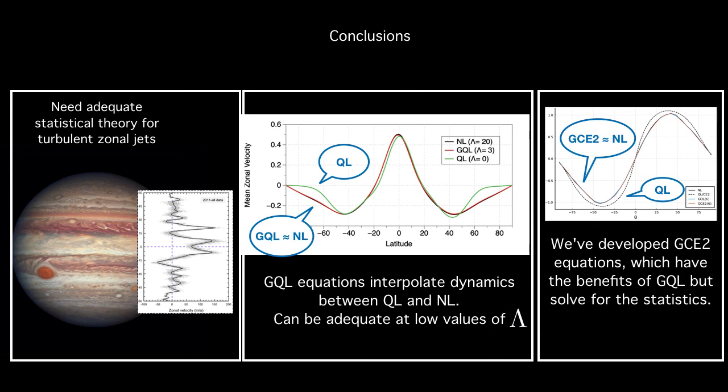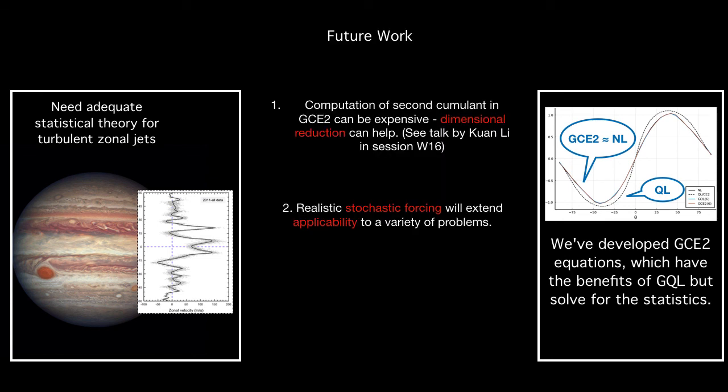Now, there is one caveat. Since GC2 involves a field bilinear, which is really a four-dimensional matrix in spectral space, we are left with the curse of dimensionality. The dimension of the matrix often is much larger than the information contained within it. So we want to use certain dimensional reduction techniques. And for some insight into what we're doing in our group, please see the talk by Kwon Lee in session W16 of this conference. The other future work we want to embark upon is to implement stochastic forcing, and this will extend our applicability to a variety of problems.